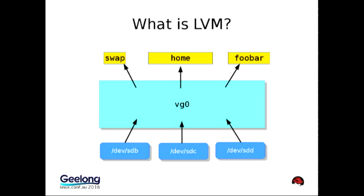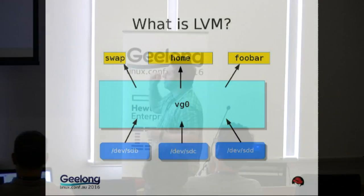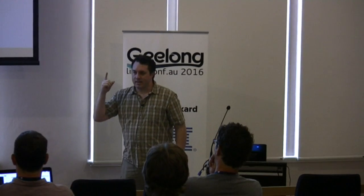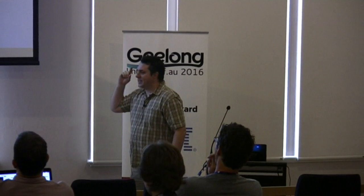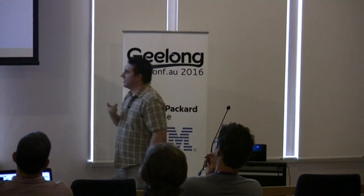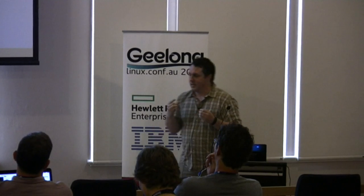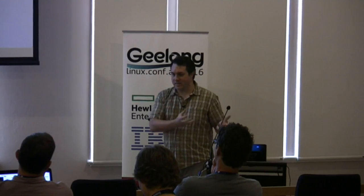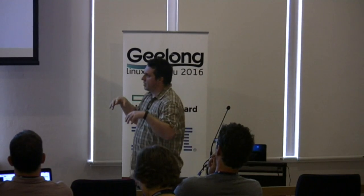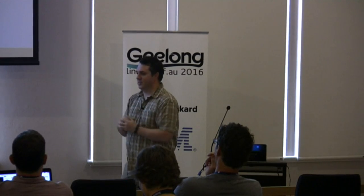LVM really consists of three major pieces of functionality. One is that it has to interact with the Linux kernel's device mapper subsystem. That's the real engine — it lets you map some disks and create more disks on top with more interesting capabilities. That's the kernel code doing all the work.